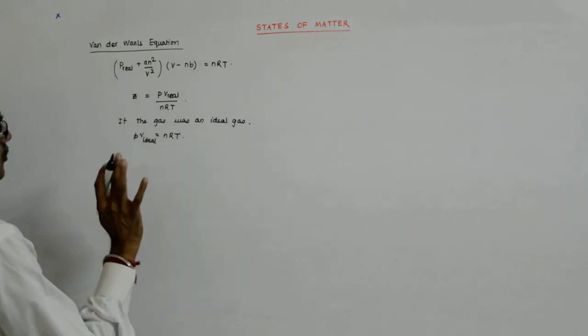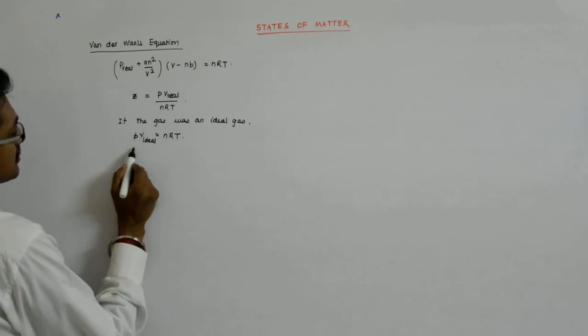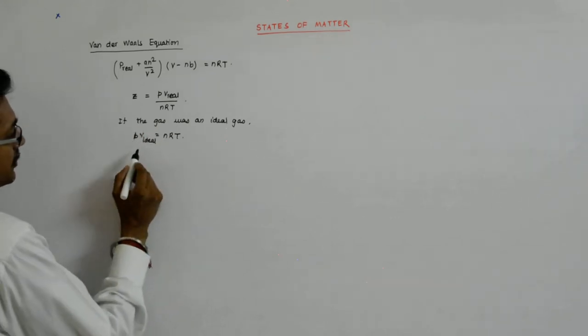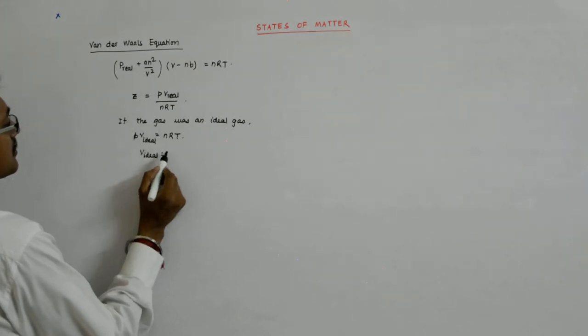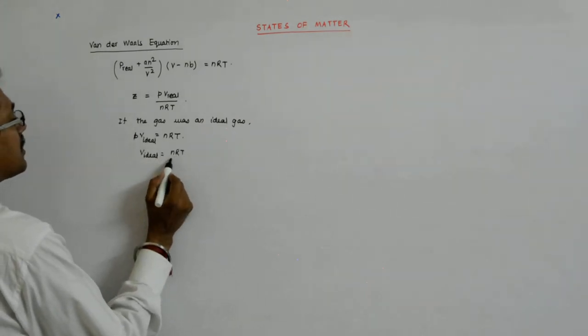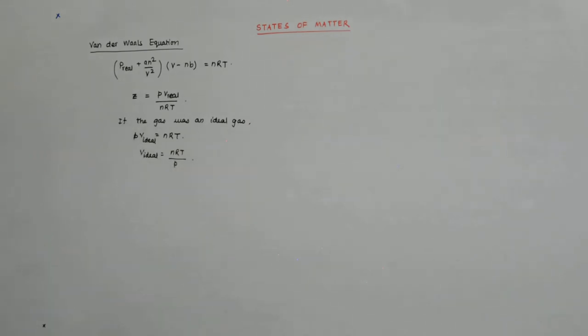V into V real. And that gives you, that gives you V ideal is equal to nRT upon P.